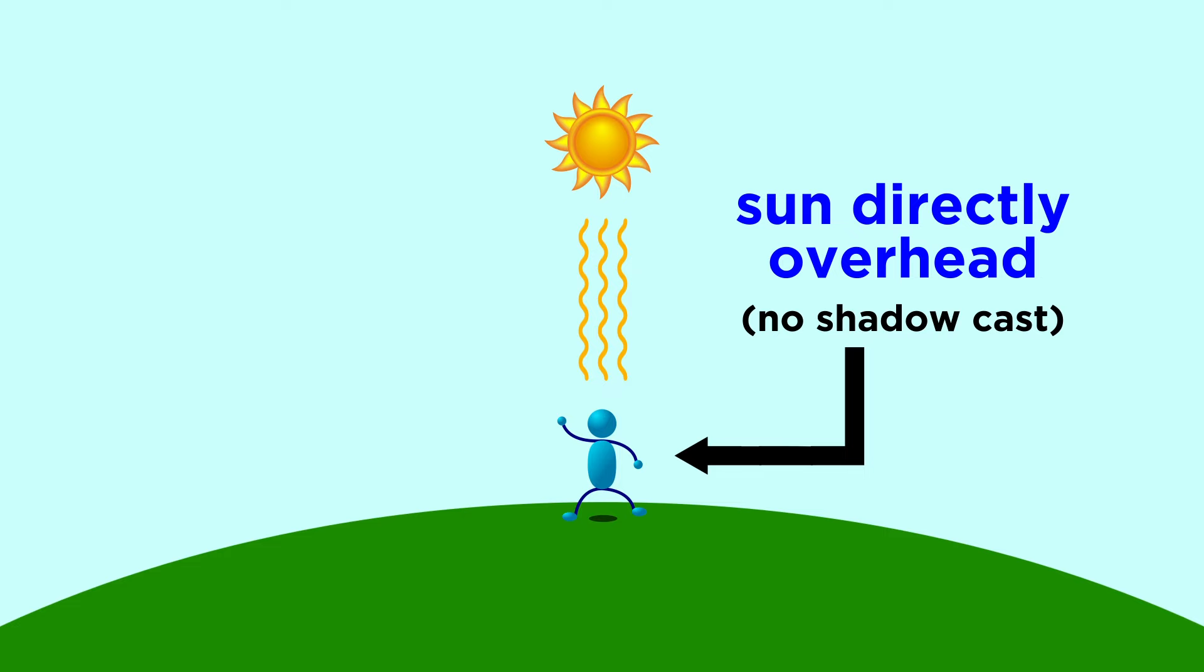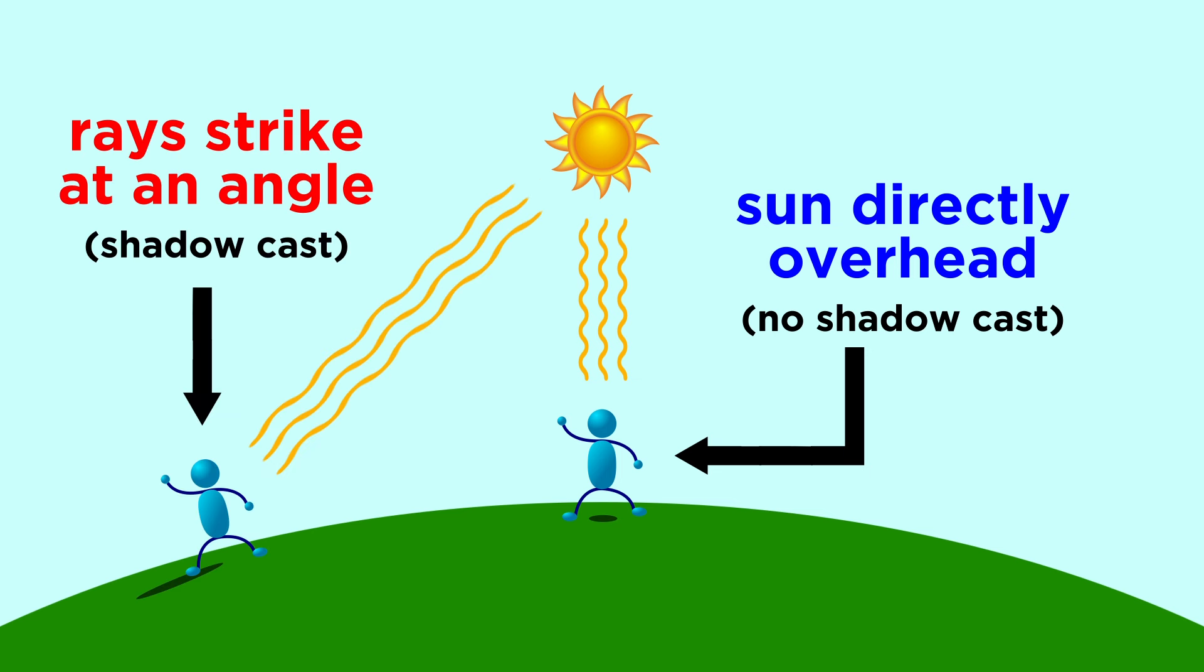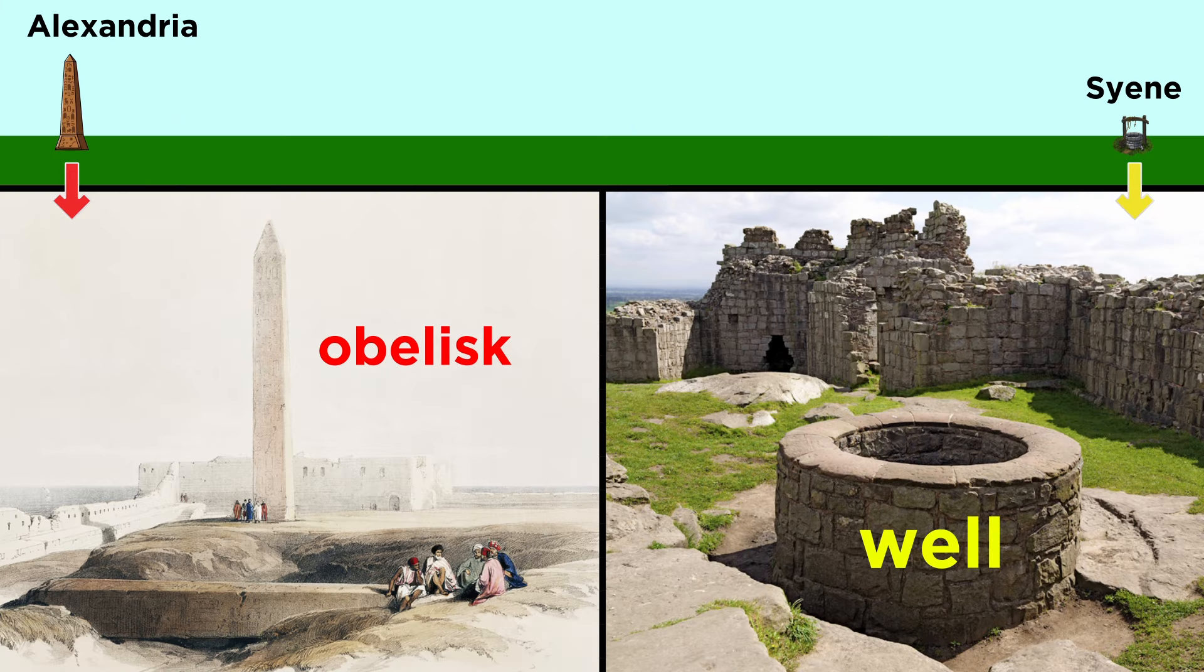He reasoned that when the sun is directly overhead one object, it must cast a shadow on some other object sufficiently far away. He used a well in one part of Egypt, and an obelisk in another part of Egypt, to take some measurements.